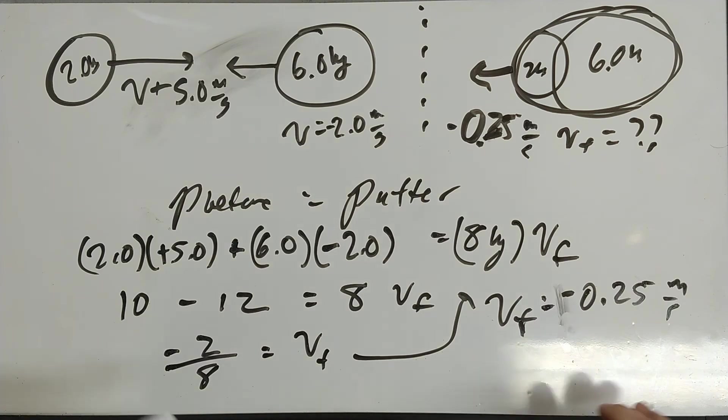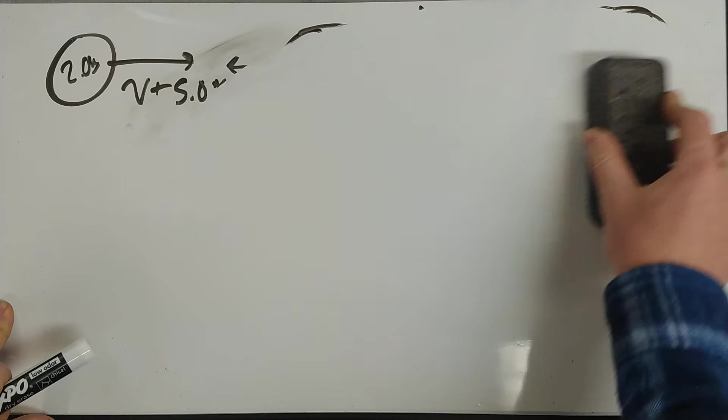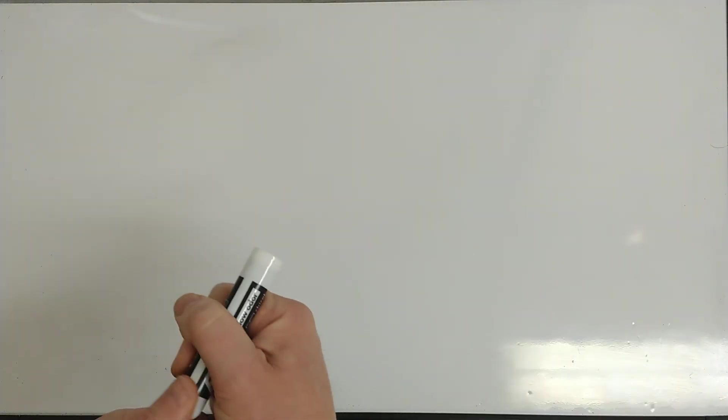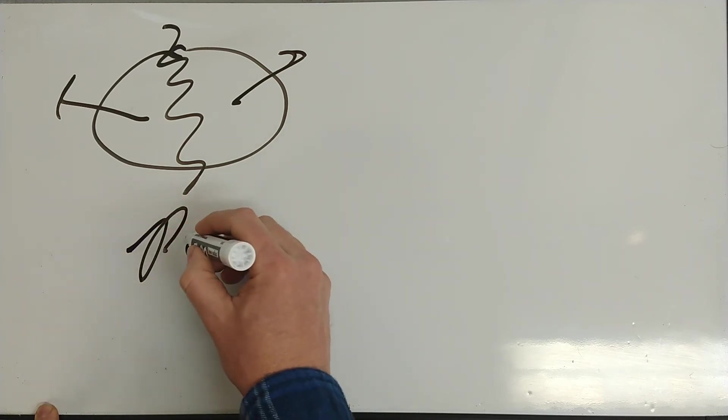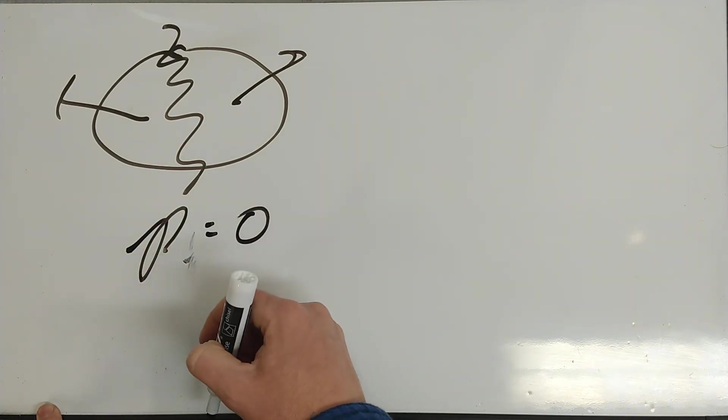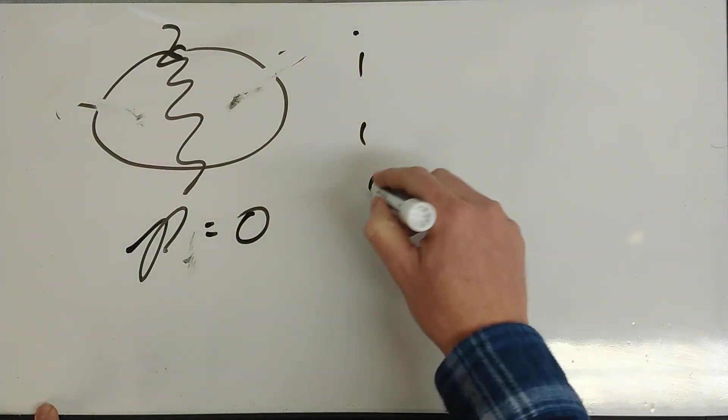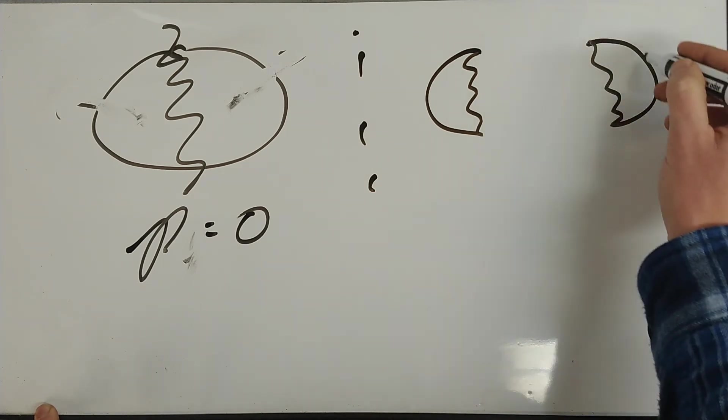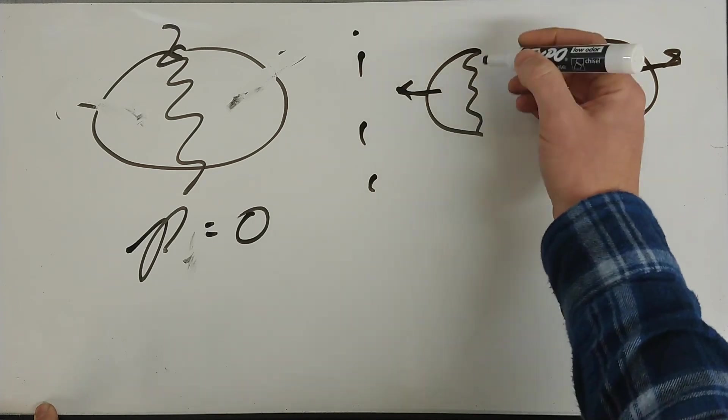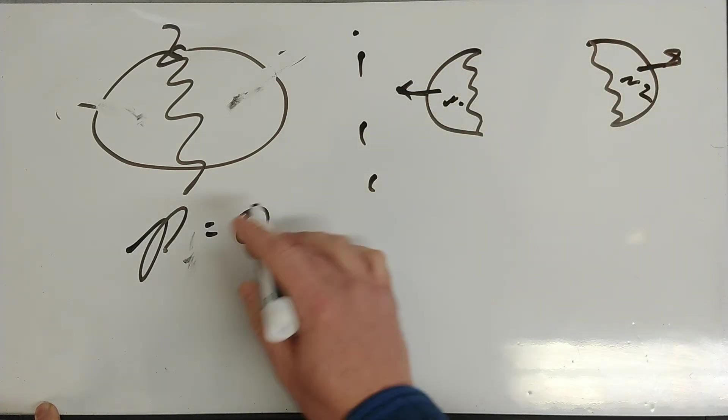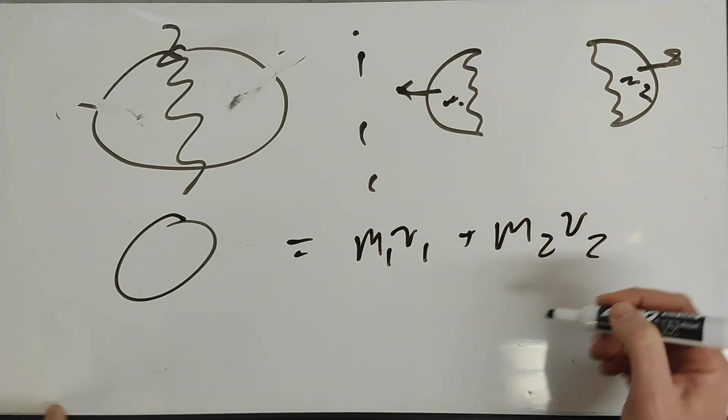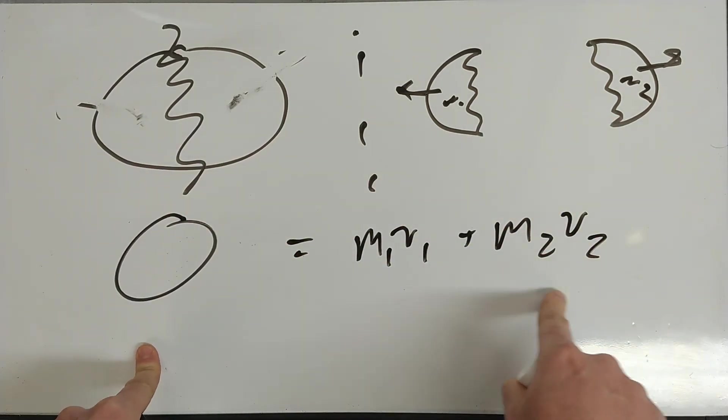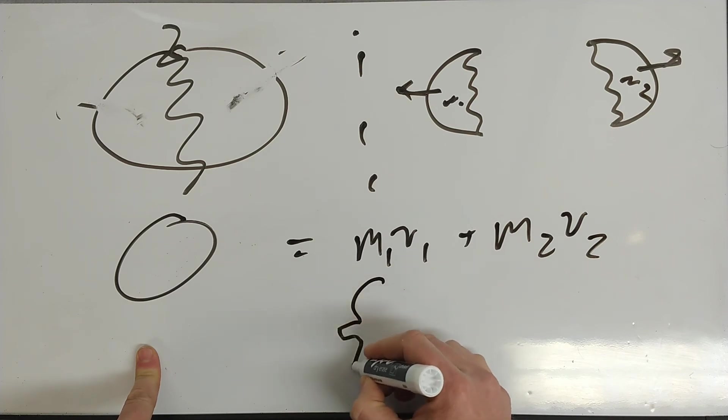One last thing I want to mention about collisions are explosions. Explosions are simply collisions in reverse. If you have something and it explodes into two pieces, the initial momentum is zero before the collision. Then after they explode apart—let's say they're equal masses m1 and m2—the total momentum before is zero. Momentum after is m1 v1 plus m2 v2. It turns out the two pieces that explode must have equal and opposite momentums when they explode.